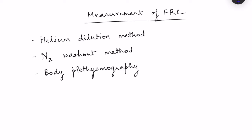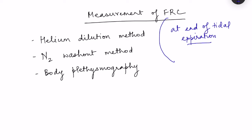Functional residual capacity is the amount of air which is present in the lungs at end of tidal expiration. This functional residual capacity cannot be fully exhaled out of the lungs. Some amount can be exhaled out — that is part of the expiratory reserve volume. Actually, FRC is expiratory reserve volume plus residual volume.